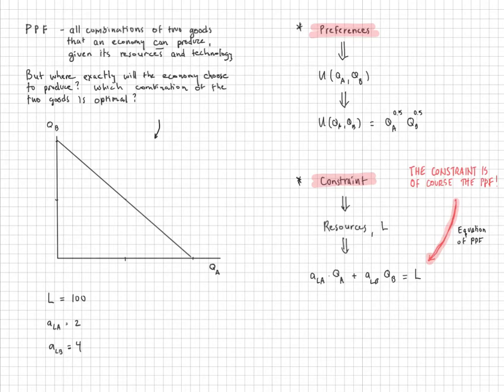Hello, in this video I want to discuss the question of where on the PPF will the economy decide to produce. So the PPF shows all combinations of two goods that an economy can produce given its resources and technology. But where exactly will the economy choose to produce? Which combination of the two goods will the economy choose? Where on this line will we be?